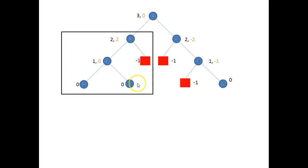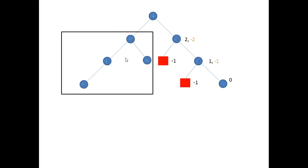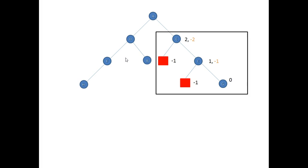Looking at the balance factors: we've got a balance factor of zero here and a balance factor of two here, and we haven't done anything over there yet. We could work on this subtree. What we're going to do is move B down to the dummy and D up. Done that — now we've got to look at the other one.